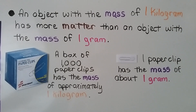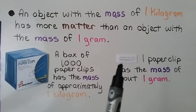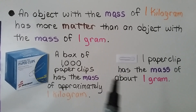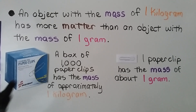An object with the mass of 1 kilogram has more matter than an object with the mass of 1 gram. A box of 1,000 paper clips has the mass of approximately 1 kilogram, and one tiny paper clip has the mass of about 1 gram. So there are 1,000 of those paper clips in the box, so there's more mass.